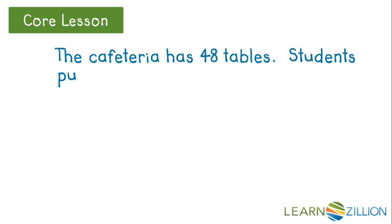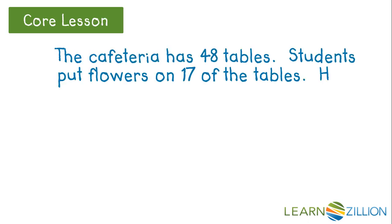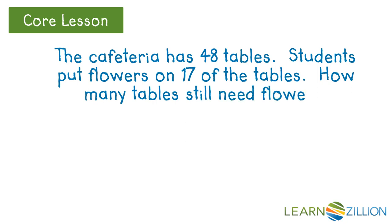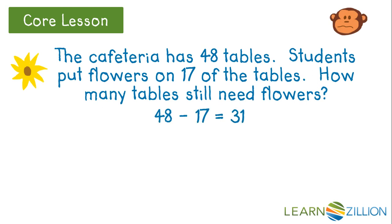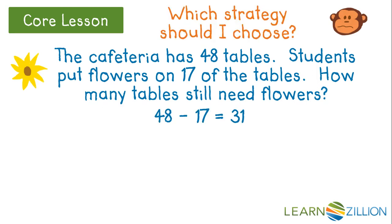The cafeteria has 48 tables. Students put flowers on 17 of the tables. How many tables still need flowers? The monkey solved this problem, and his answer is 31. Now he needs to choose a strategy to explain.